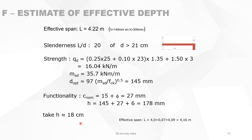The effective span changes now because h = 180 mm is less than 300 mm, so the effective span is in fact 4.16 meters instead of 4.22 meters. In reality we would need to redo the calculation, but you will end up with the same number.